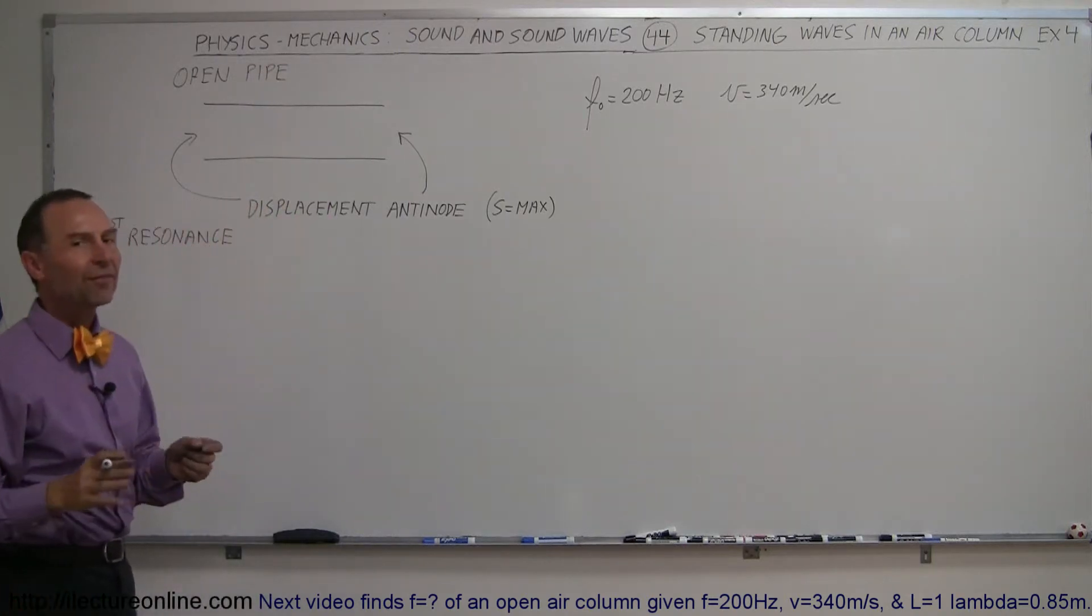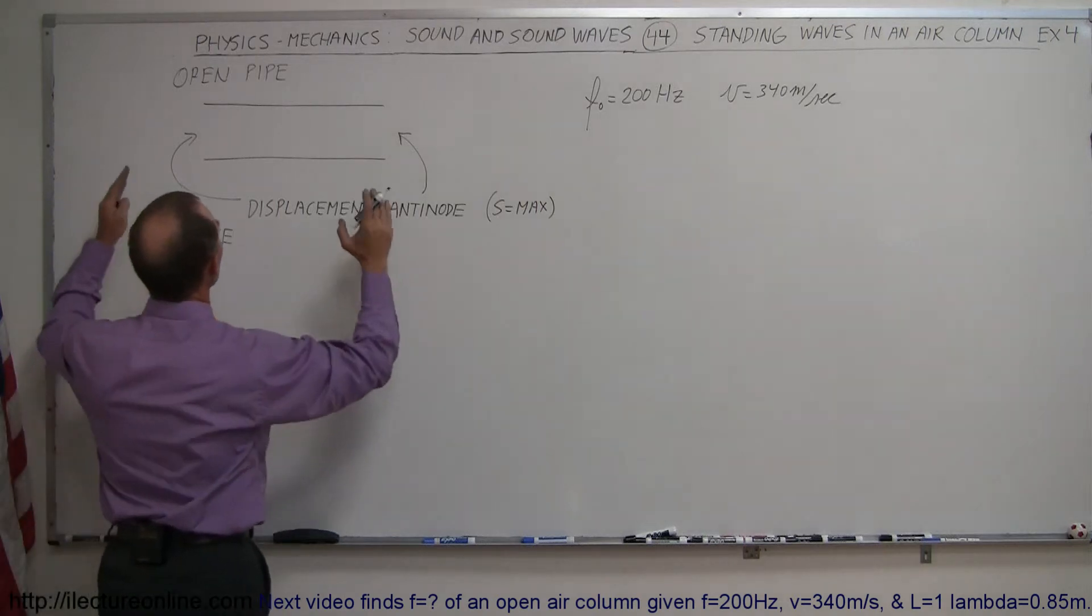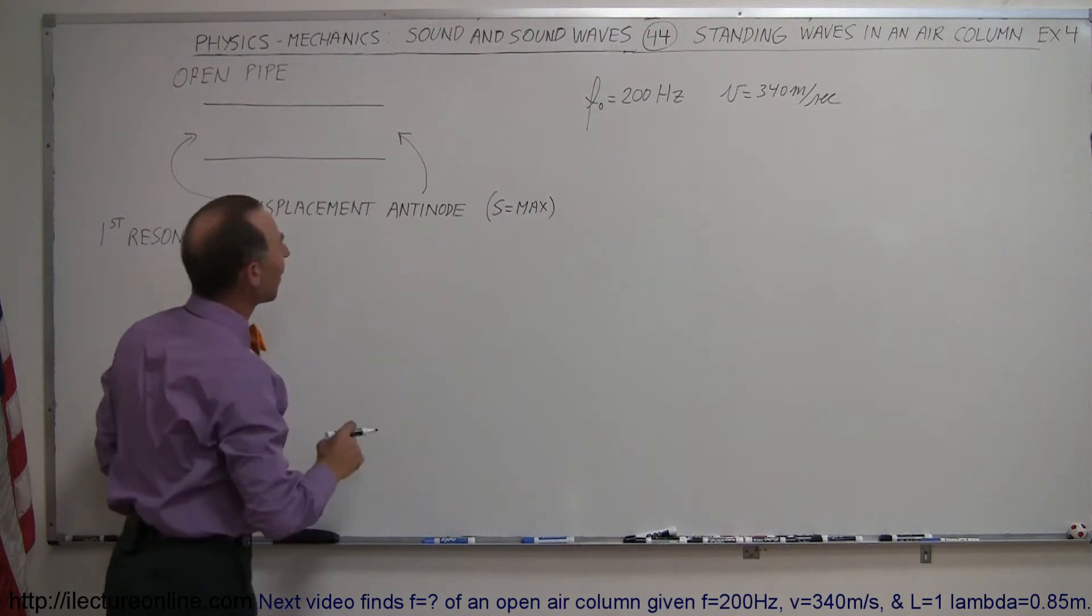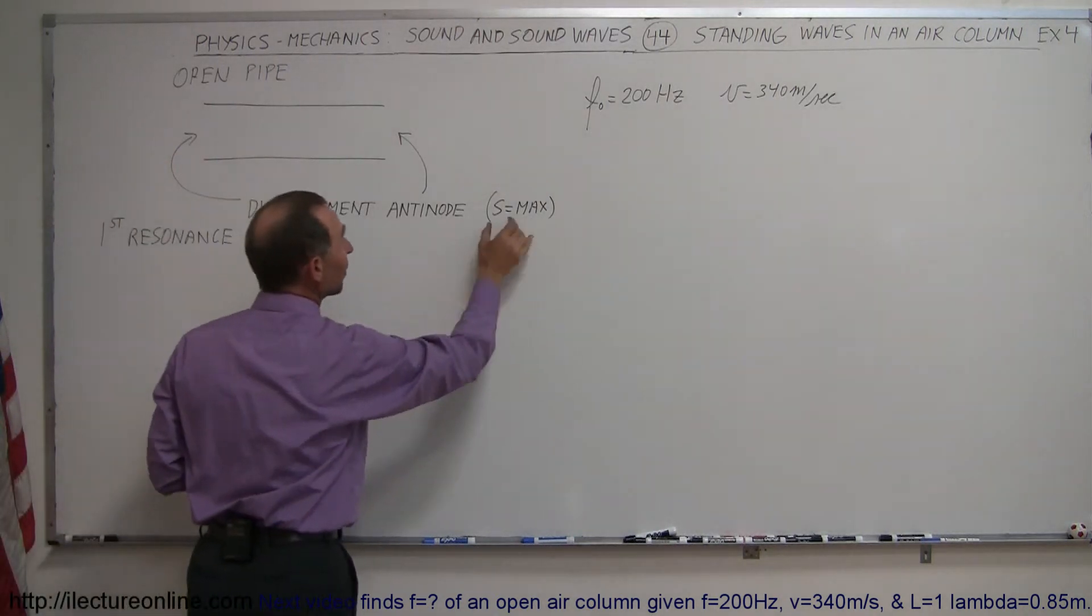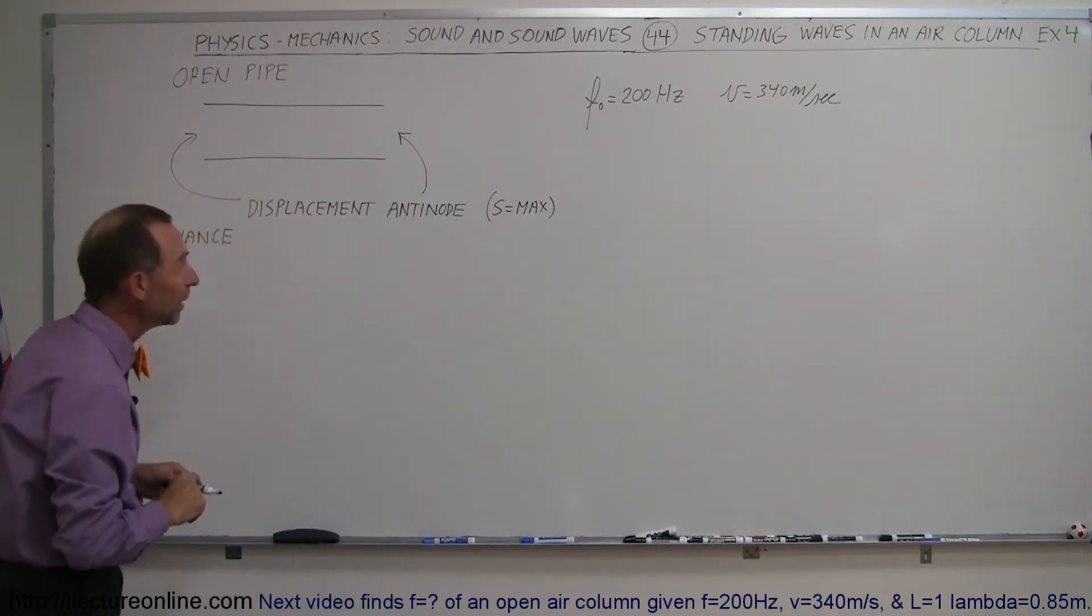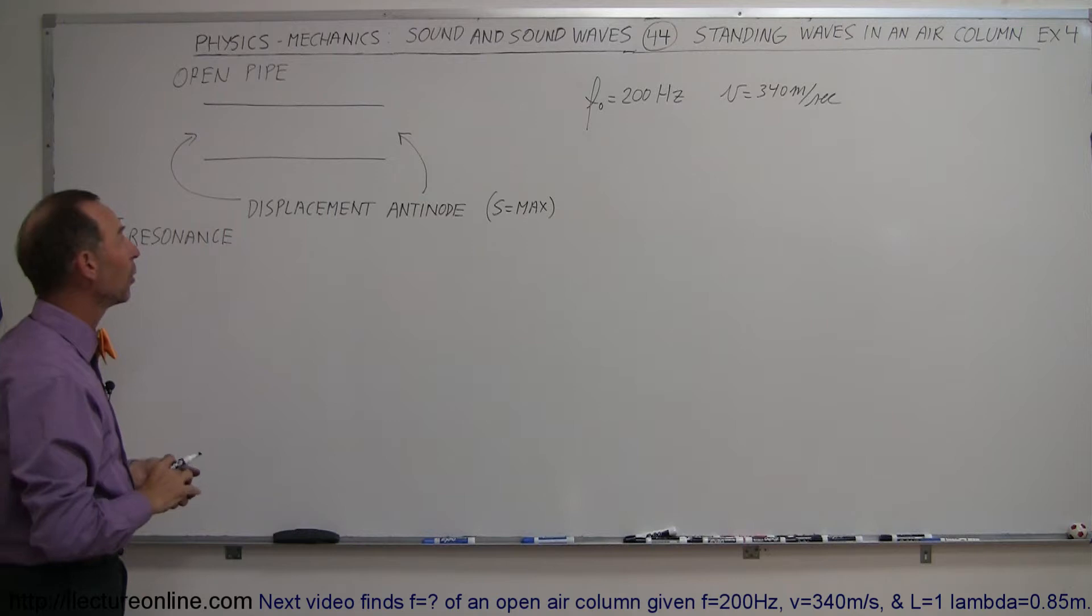In order to have a standing wave in an open tube, it is necessary that there's a displacement antinode on both sides of the open pipe. A displacement antinode means maximum displacement of the air molecules from their normal position, and that means there would be zero pressure at those particular points.